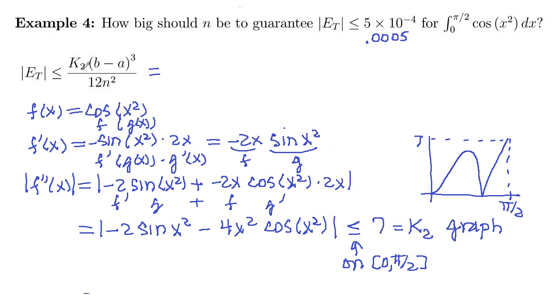So now we can replace our k2 with a 7. b minus a. So a is 0, b is pi over 2. So pi over 2 minus 0, that gets cubed. Divide by 12n squared.